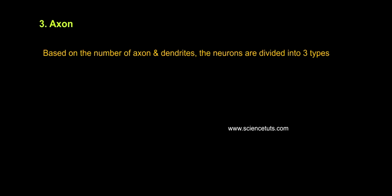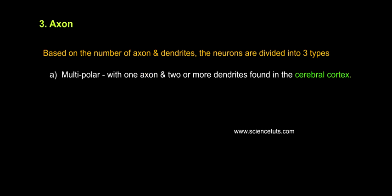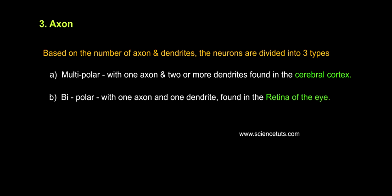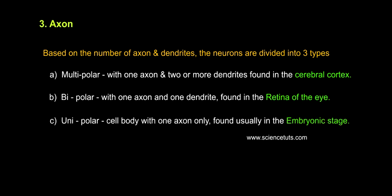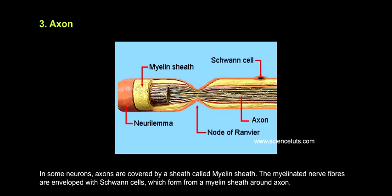Based on the number of axons and dendrites, neurons are divided into three types. A: Multipolar — with one axon and two or more dendrites, found in the cerebral cortex. B: Bipolar — with one axon and one dendrite, found in the retina of the eye. C: Unipolar — cell body with one axon only, found usually in the embryonic stage.